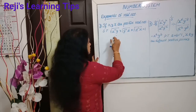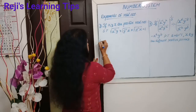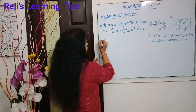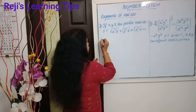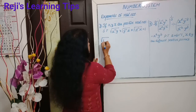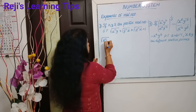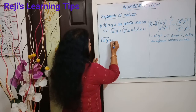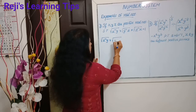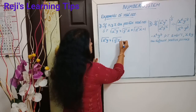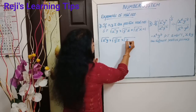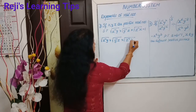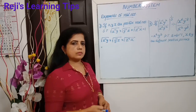Now we have x raised to minus 1 into y, into root of y raised to minus 1 into z, into root of z raised to minus 1 into x.